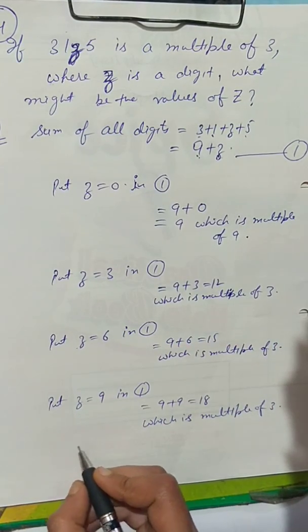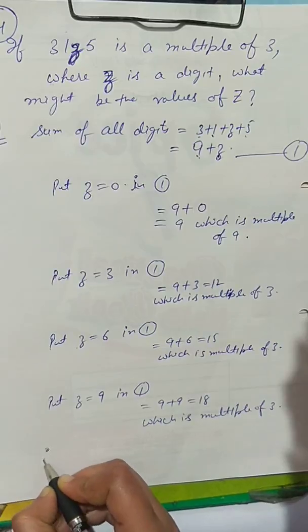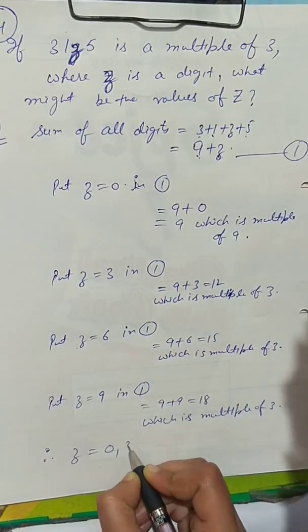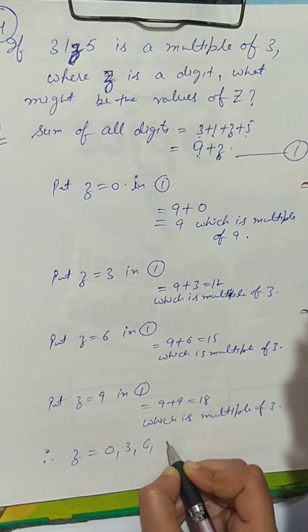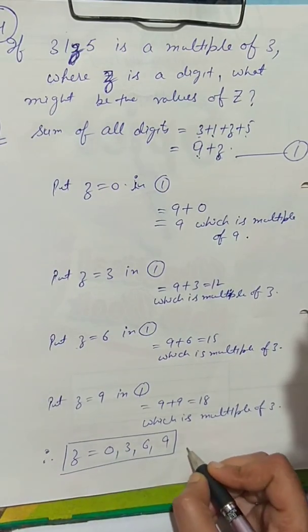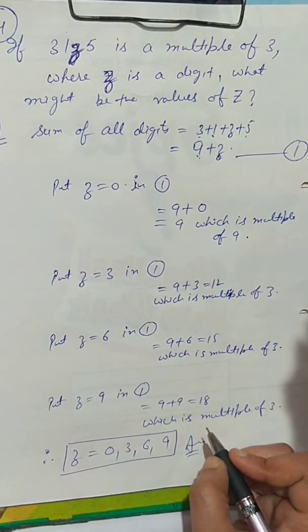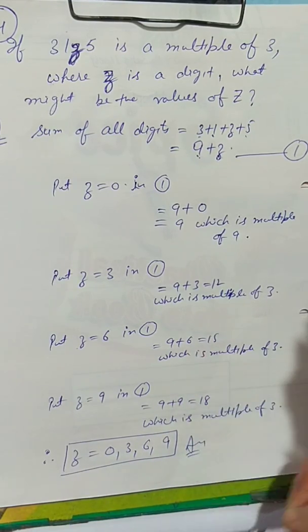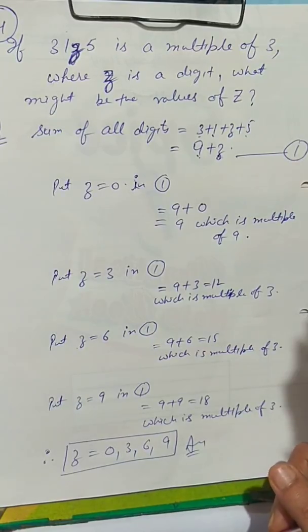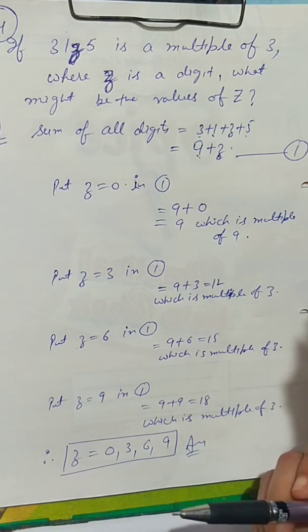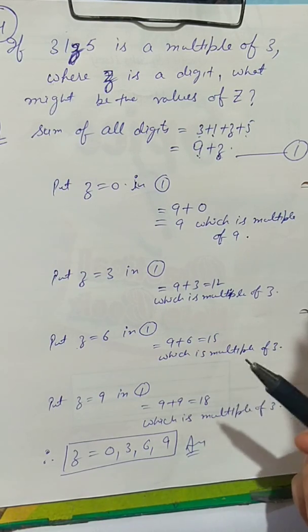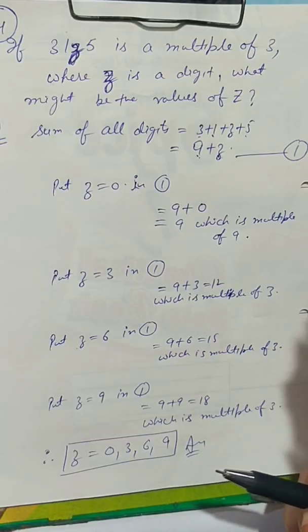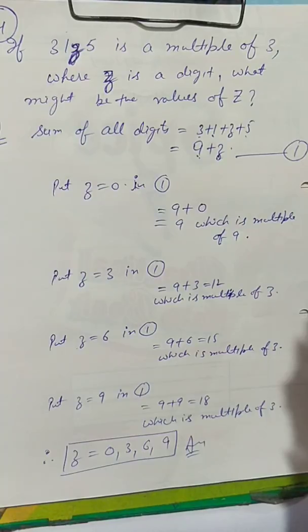Checking all values from 0 to 9, therefore z = 0, 3, 6, 9 is our answer. That completes question number 4, and with this, Exercise 16.2 and Chapter 16 are complete. Next we will start Chapter 2. If you have any doubts, please comment below. Thank you, students.